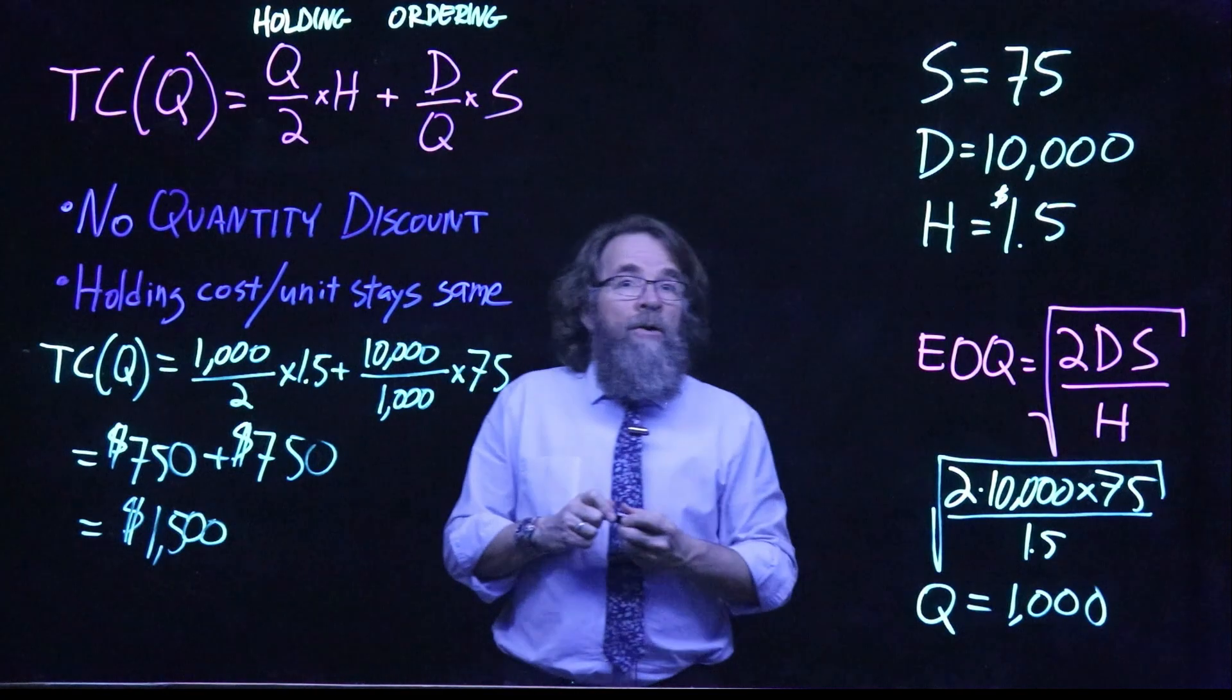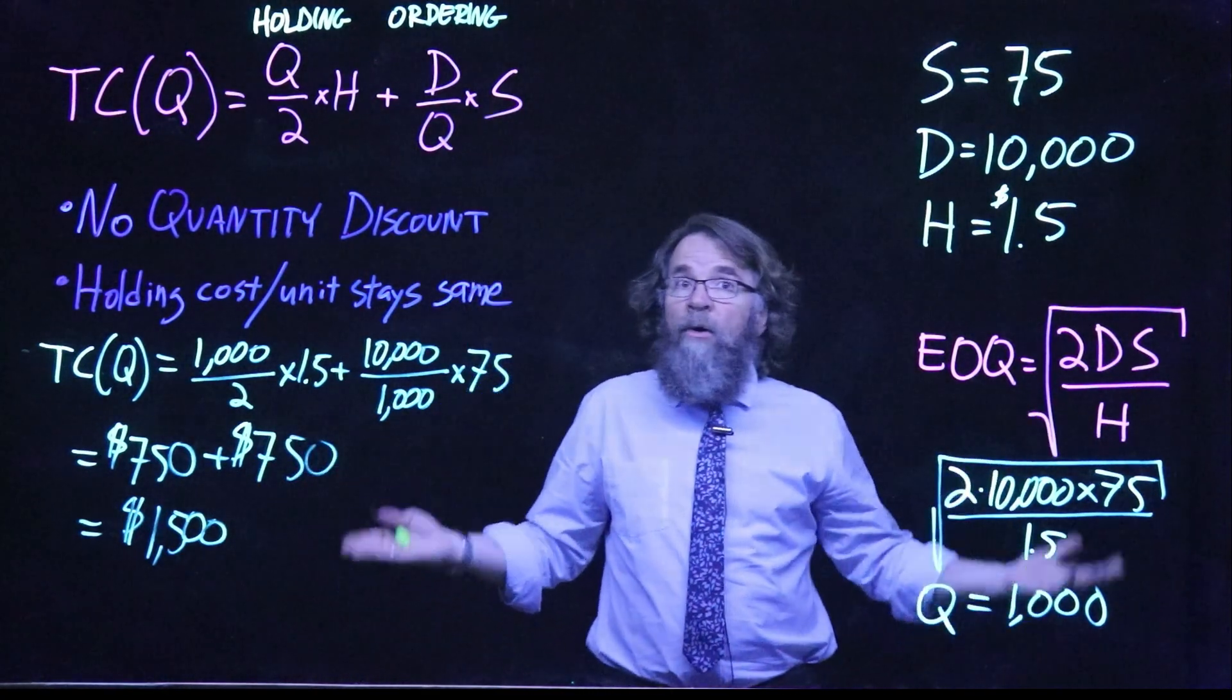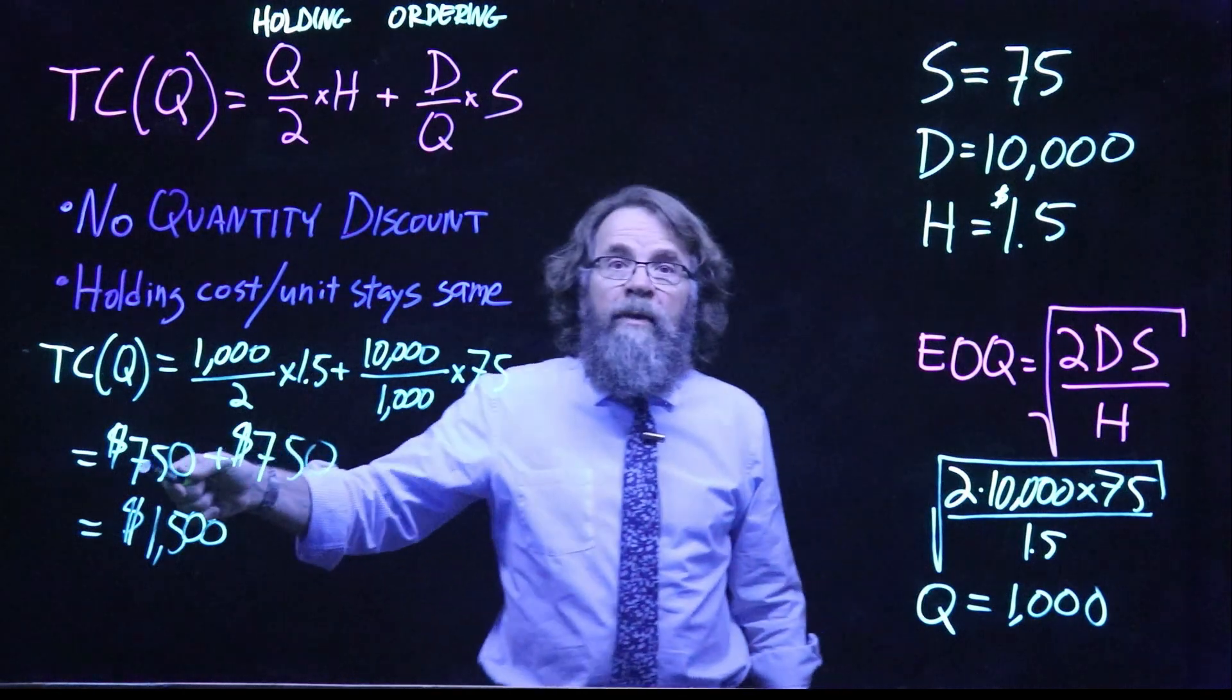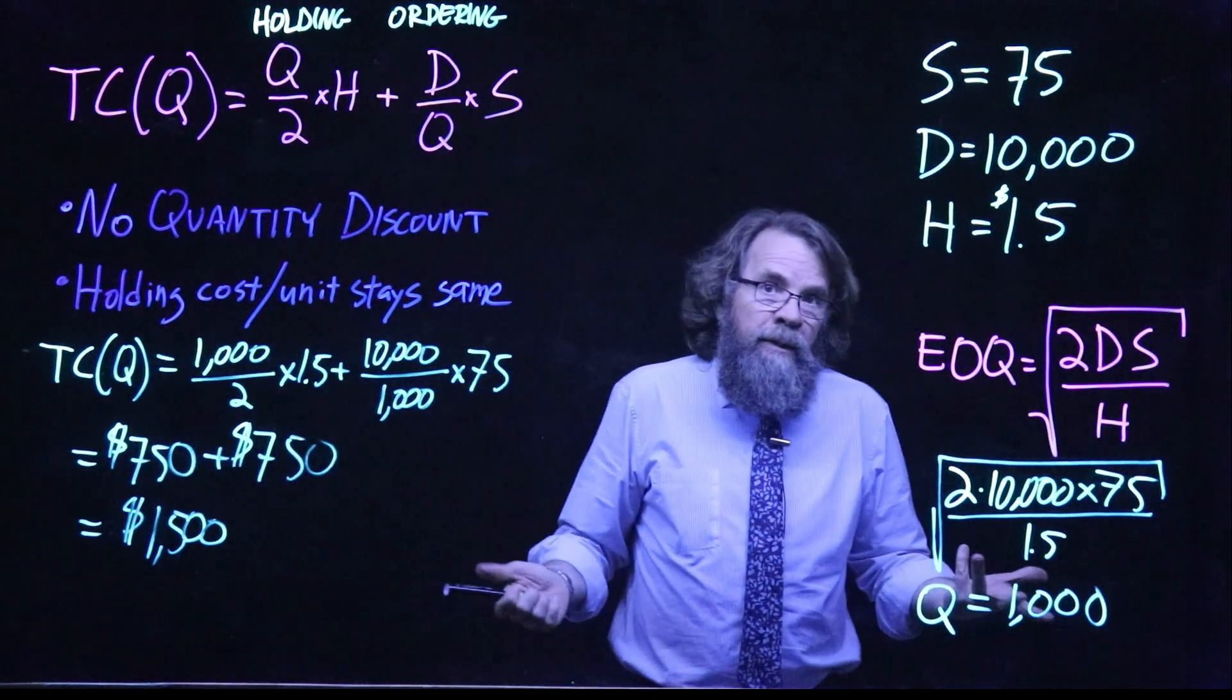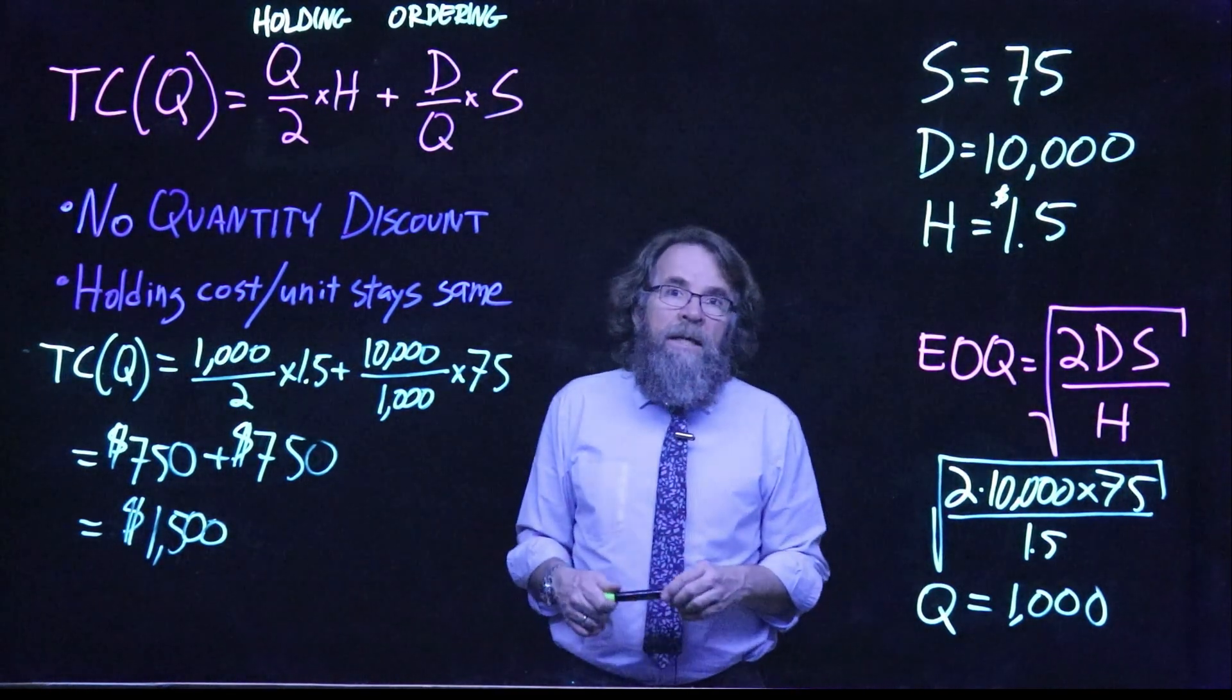And as we know from the EOQ, the holding and ordering costs should be perfectly balanced. And they are, they are both $750. And that's just one of the nice side benefits of the EOQ.